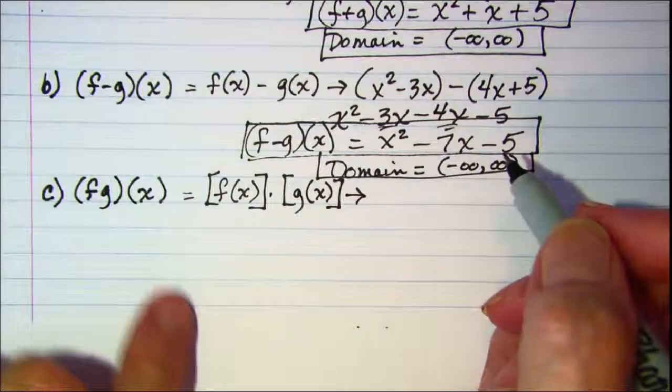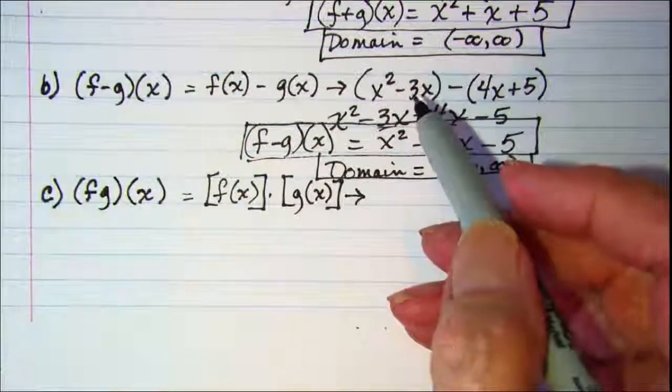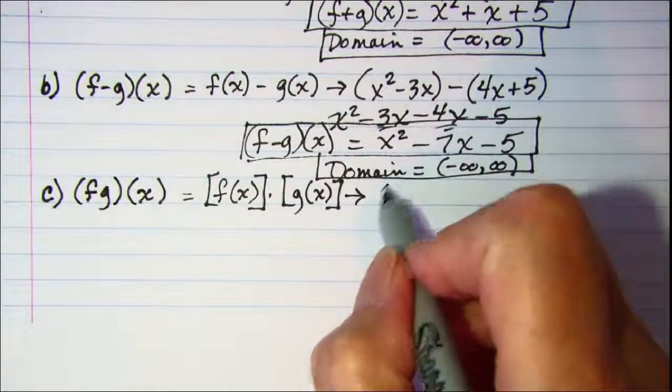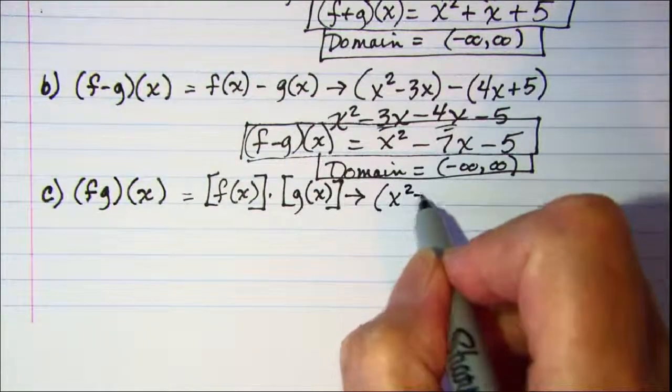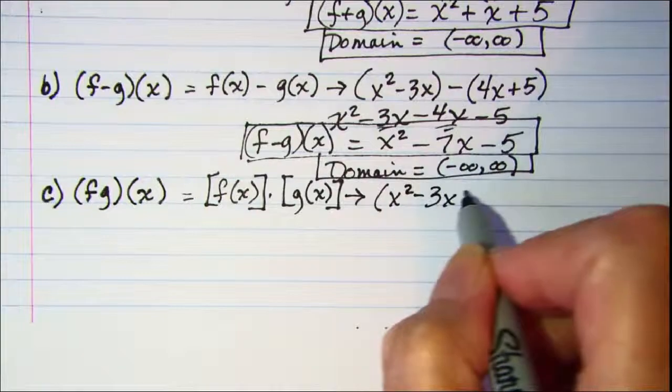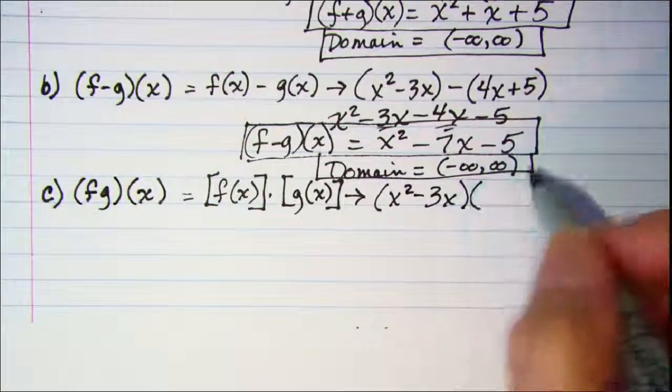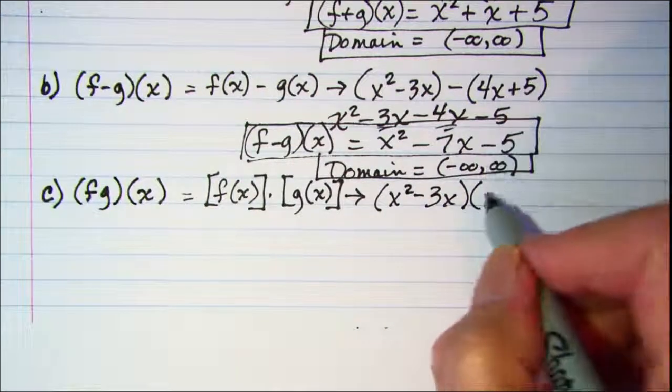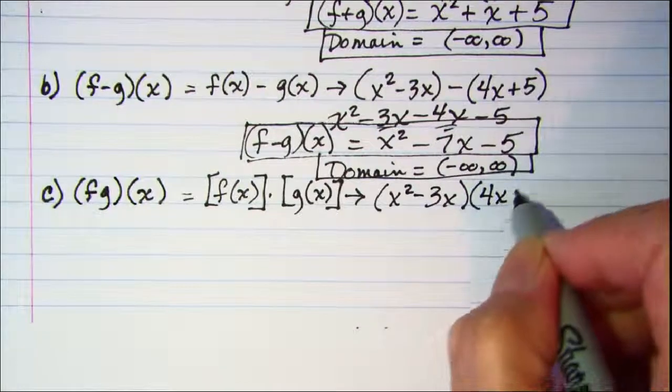So f of x was x squared minus 3x and then we're multiplying that by g of x which is 4x plus 5.